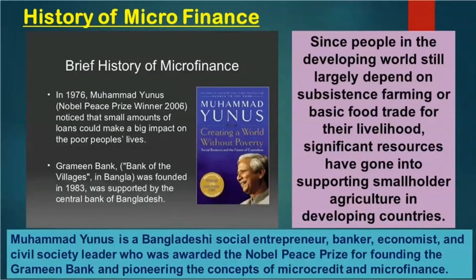Now let us discuss the history of microfinance. It started many years back, but the practical successful experiment was conducted by Muhammad Yunus. In 1976, Muhammad Yunus — who was awarded the Nobel Prize in 2006 — noticed that small amounts of loans could make a big impact on poor people's lives. He started Grameen Bank, the Bank of the Villages, in Bangladesh.